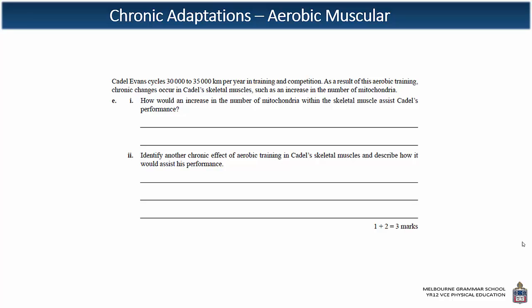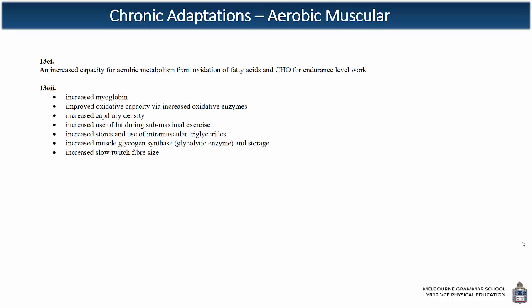Make sure you pick one that you can explain really well. For example, myoglobin means a greater opportunity to extract oxygen, which increases the availability of oxygen and therefore the ability of the aerobic system to produce ATP. Looking at the answers: increased capacity for aerobic metabolism by oxidising fatty acids and carbohydrates. Be really specific with your terminology — say either triglyceride and glycogen, or fatty acids and glucose, or fats and carbohydrates. Don't switch between chemical fuel and food fuel terms within the one answer. If you chose increased use of fats during submaximal exercise, you'd need to explain that it leads to glycogen sparing, meaning you can work at a higher intensity using fats for longer.